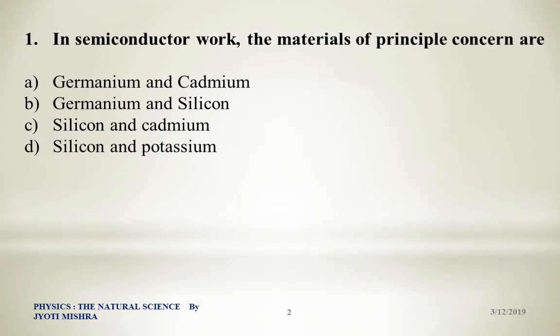Question number one: In semiconductor work, the materials of principal concern are — that is, which material is most used in semiconductor devices? Option A: germanium and cadmium. Option B: germanium and silicon. Option C: silicon and cadmium. Option D: silicon and potassium. The answer is germanium and silicon.